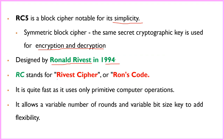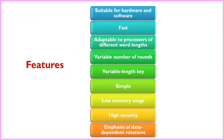The word RC stands for Rivest Cipher or Ron's Code. RC5 is very fast because it uses only primitive basic computer operations like addition, subtraction, and XOR. It allows a variable number of rounds and variable bit-size keys to add flexibility. The number of rounds and key size are not fixed — they are variable in nature. Features include: fast adaptability, support for different word lengths, variable number of rounds, variable length keys, simple low memory usage, high security, and data-dependent rotation.